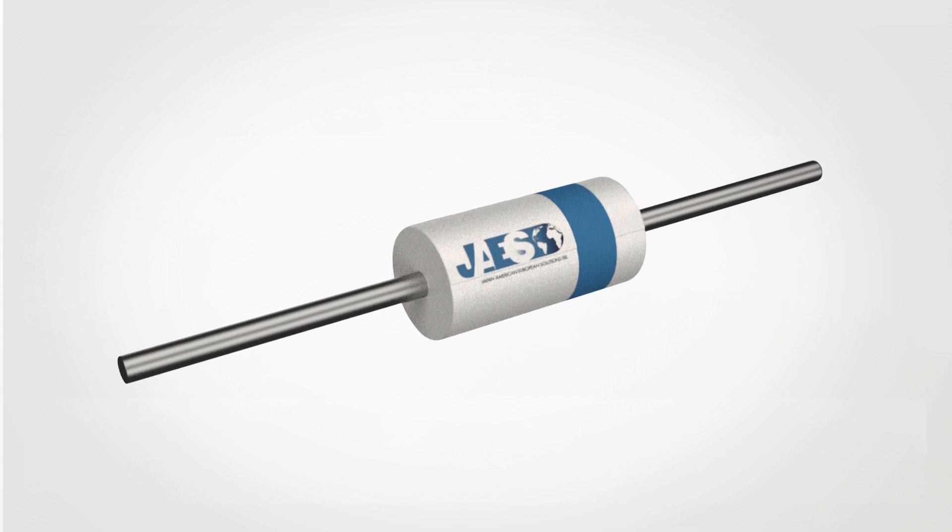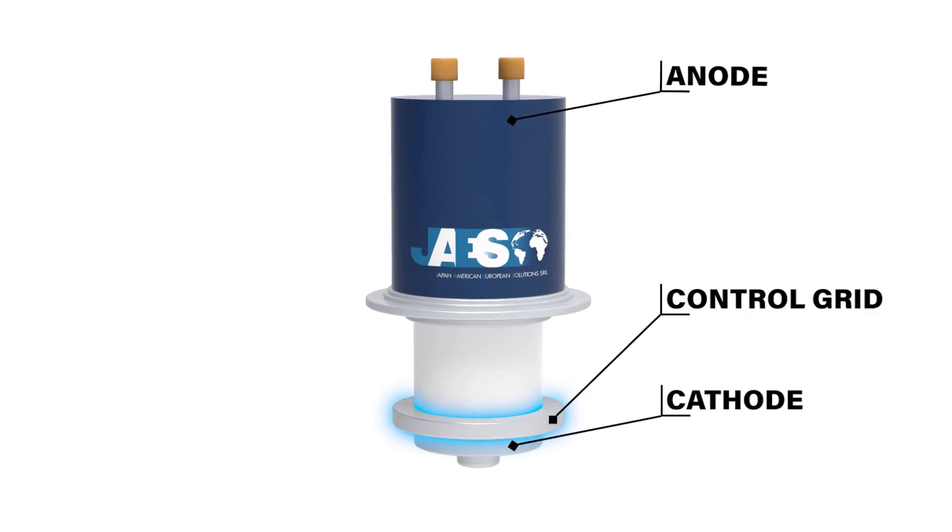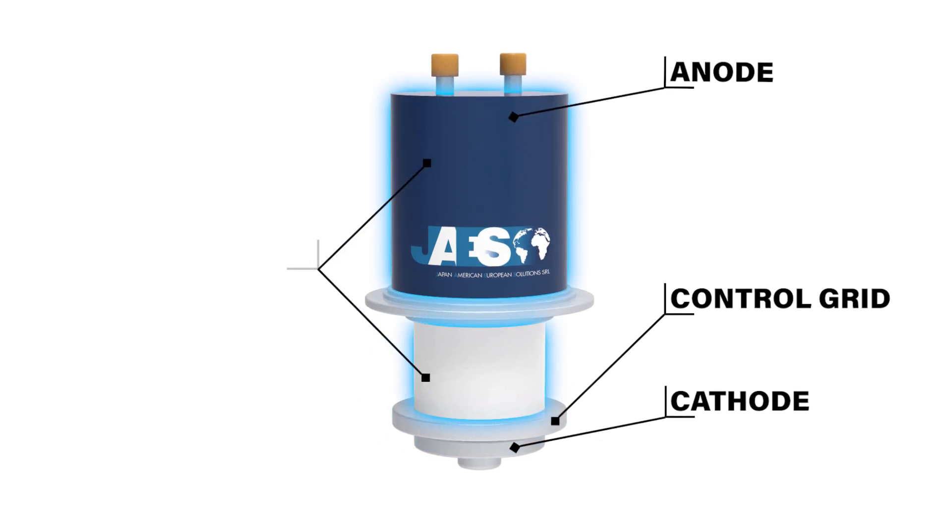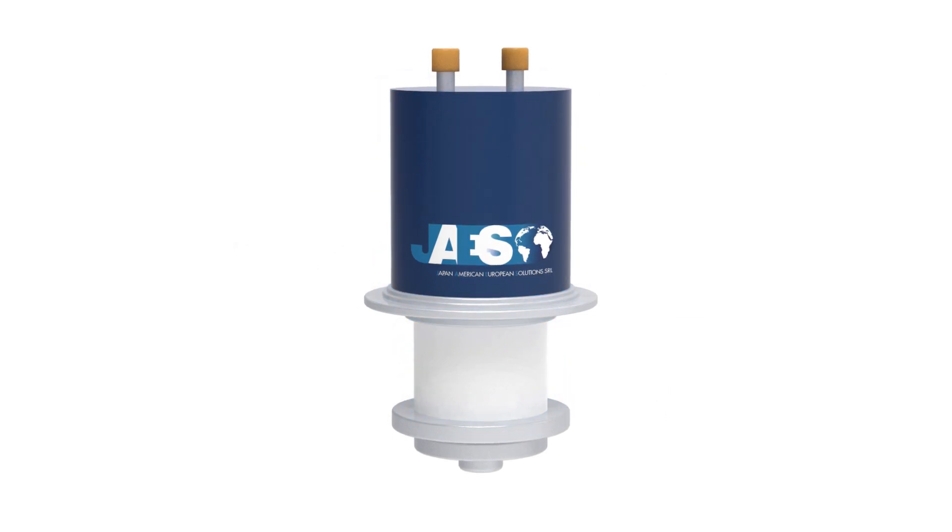Unlike the diode, the triode, as the name suggests, is provided with a third electrode placed between the cathode and the anode, called control grid. All these elements are placed inside a tube in which a vacuum has been created, which means that all the air and other gases have been removed.